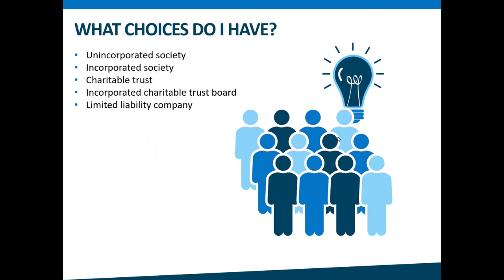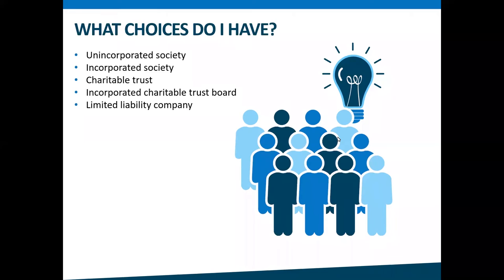There are a number of different ways that organizations can be set up, and we're going to spend some time looking at each of them. Becoming a registered charity does not change your structure — if you're an incorporated society before you get registered as a charity, you'll still be an incorporated society. What registration does is show that your organization is charitable under the Charities Act. The most common structures are unincorporated or incorporated societies, charitable trusts, incorporated charitable trust boards, and limited liability companies. Charities can also be formed under an act of parliament in different forms, like a marae, but today we'll focus on the most common ones.